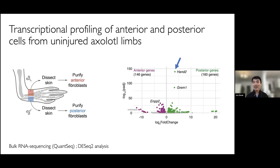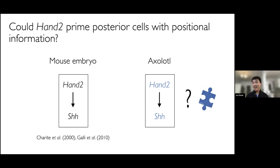Among all of the genes, I'm highlighting with this arrow the expression of one transcription factor called HAND2, whose statistical significance really stood out to us. It was the most dominant signature gene in posterior cells that we recovered in this dataset. HAND2 is actually very important for any limb researcher because it's been shown in many vertebrate limb buds — such as mouse, chick, and zebrafish — that HAND2 can positively regulate the expression of sonic hedgehog, which is that posterior signaling center gene I mentioned at the beginning.